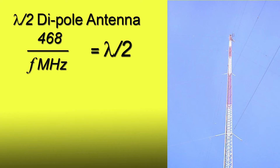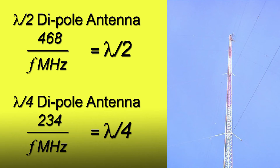Now let's get into a little theory. To calculate for a half-wave dipole, we take 468 over the frequency in megahertz. And for a quarter-wave, or monopole, we take 234 over the frequency in megahertz.